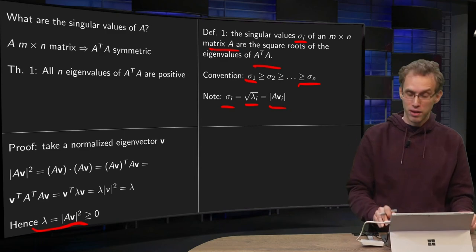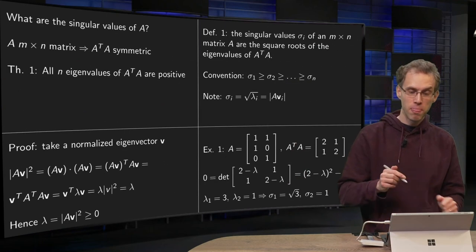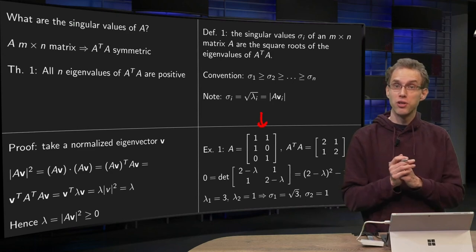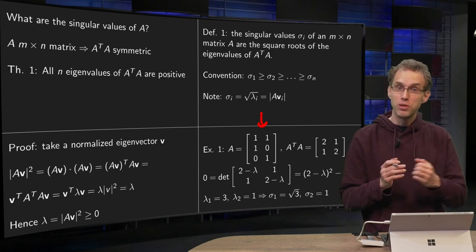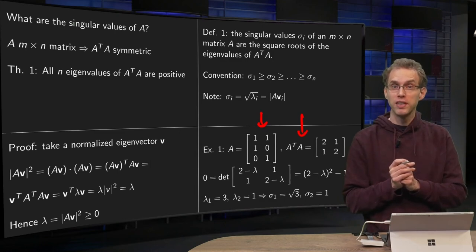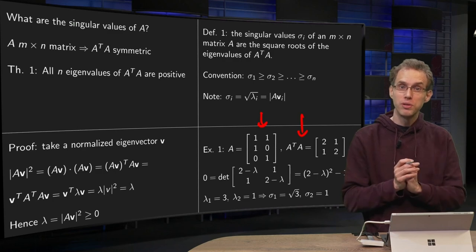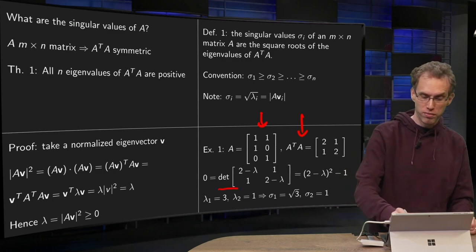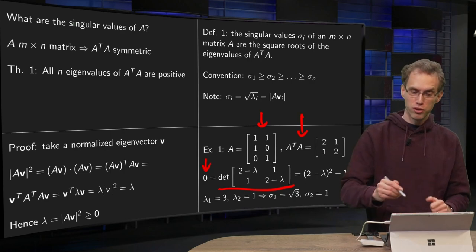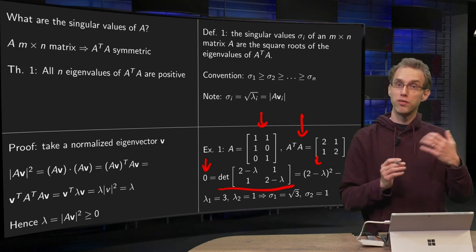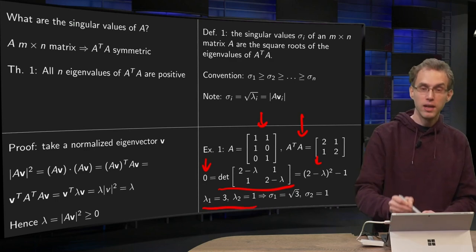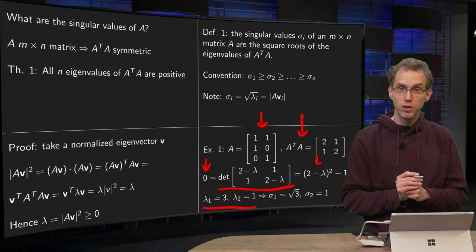Now let's compute the singular values of a matrix A in an explicit case. We have a 3 by 2 matrix A, which does not have normal eigenvalues, but we can still compute the singular values. First we compute A transpose times A and get a symmetric 2 by 2 matrix. Computing the determinant of A transpose A minus lambda I and setting it to zero gives 2 minus lambda squared minus 1 equals zero, so lambda equals 2 plus or minus 1, yielding eigenvalues lambda_1 equals 3 and lambda_2 equals 1.